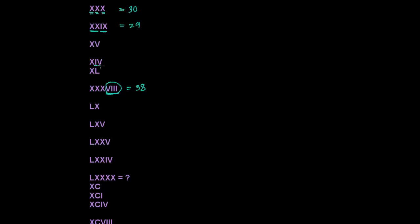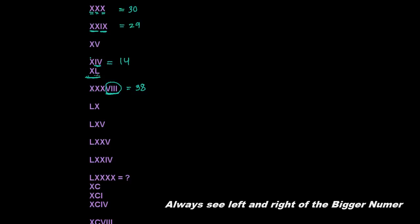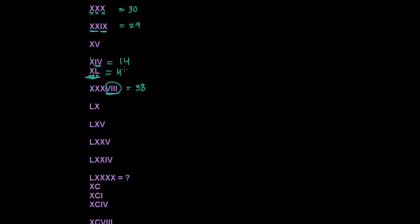Here X and IV: IV represents 4, so this is 10 and then 4, that is 14. Here X and L — can you read it as 10 and L? No, because L is the bigger number. L is 50, and if I'm writing 10 before 50 that means I'm subtracting 10, so that means it is 40. Similarly here X is bigger and V is smaller, so 10 plus 5 is 15.